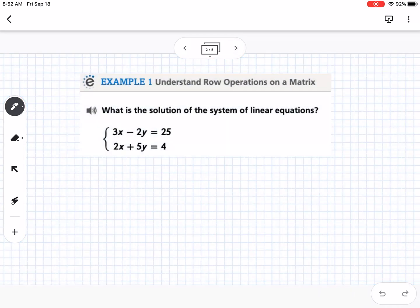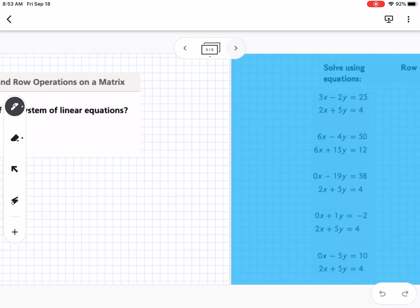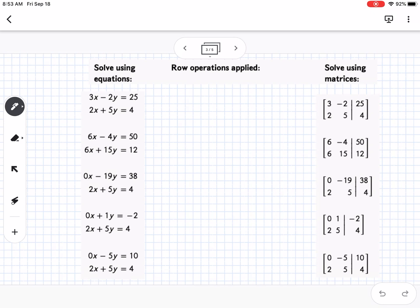It's important that we understand both methods. Example 1 is understanding row operations on a matrix. It says, what is the solution of the system of linear equations? We have 3x minus 2y equals 25, and 2x plus 5y equals 4. To make this easy to walk through, I took all the steps and put them down, and then I'm going to write in the middle what we're doing. You can see we have equations over here, and we have the matrices over here.